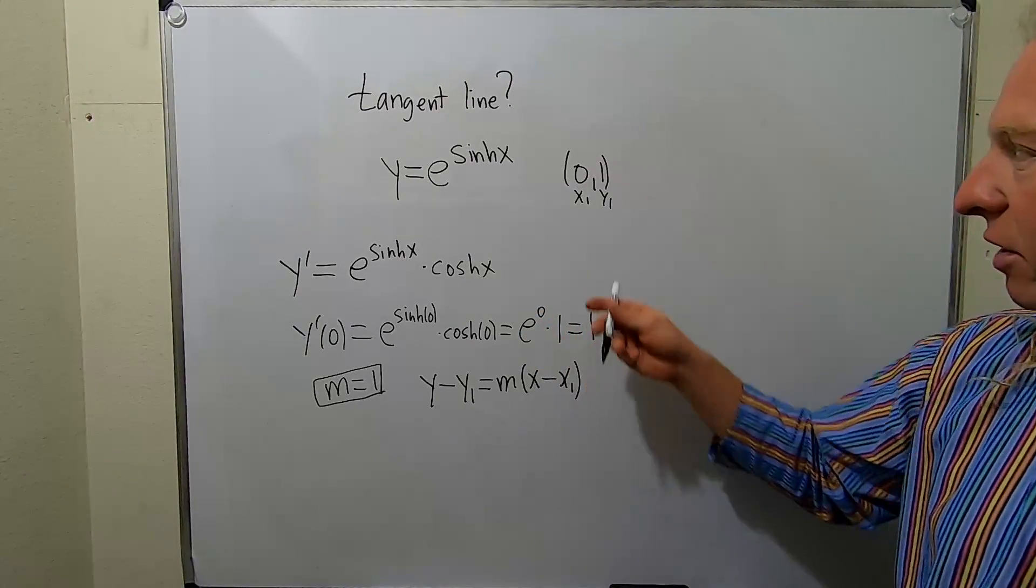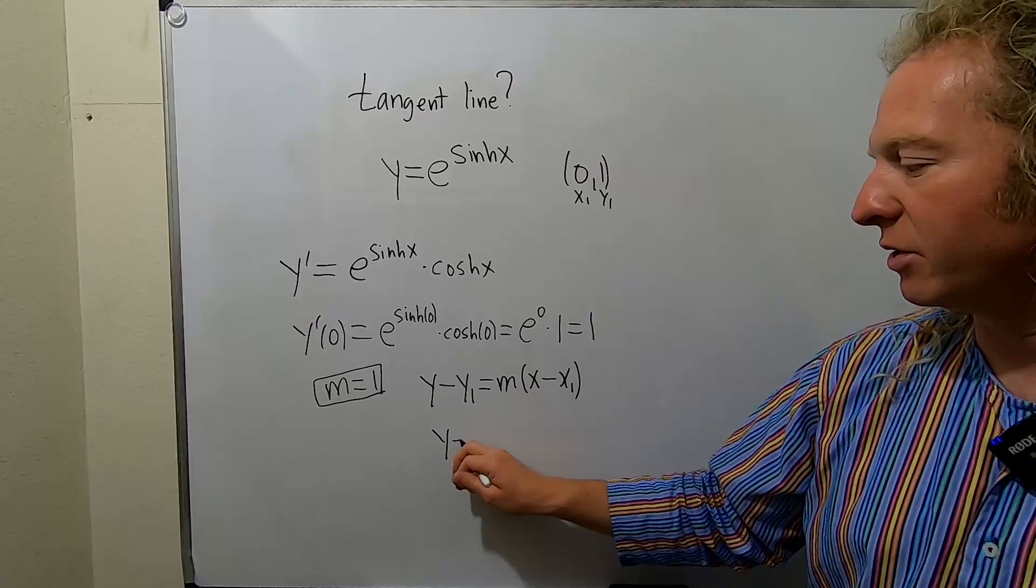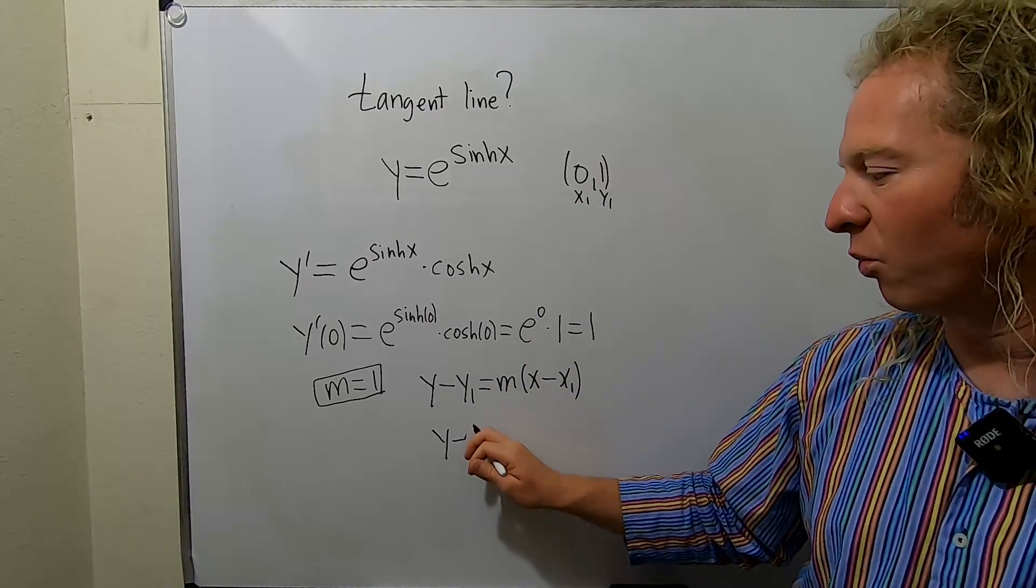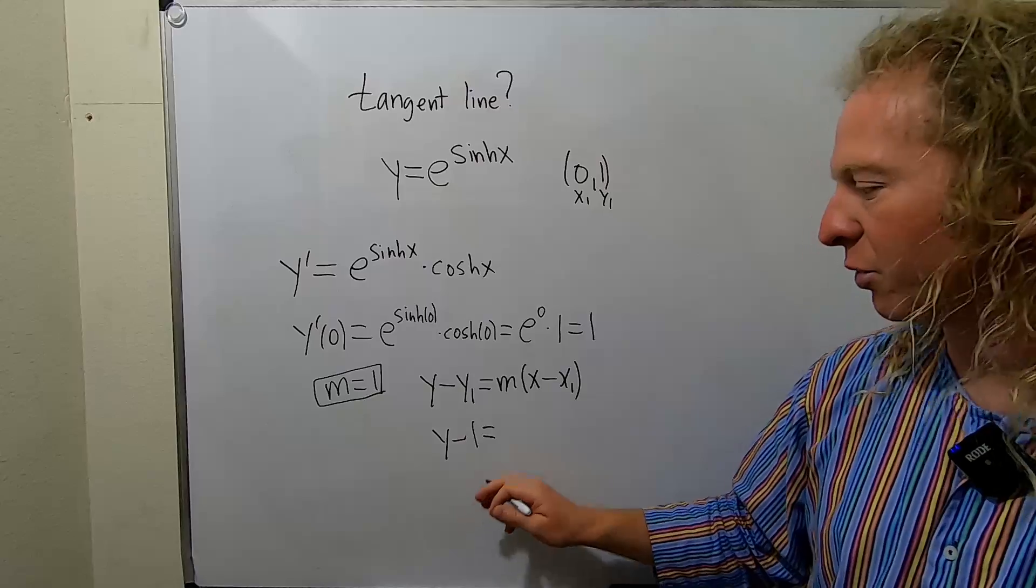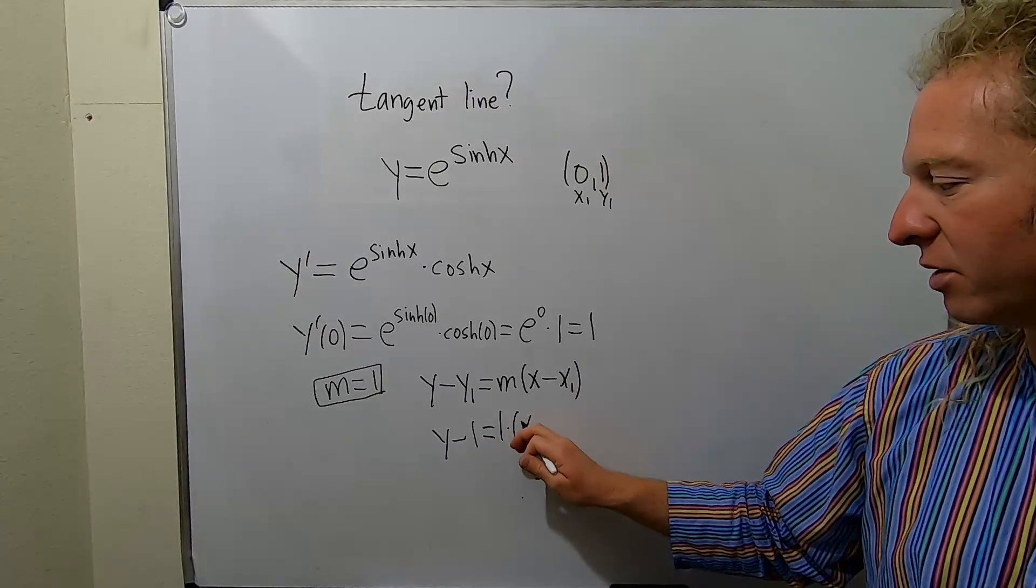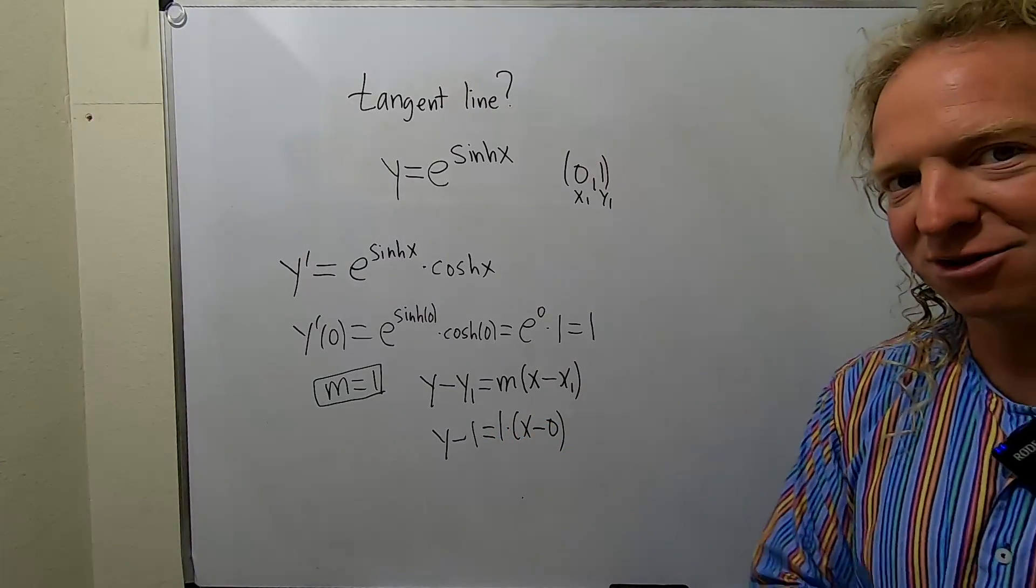Now we carefully plug everything in. We have y minus... So y₁ is 1. And that's equal to m. Well, m was 1. So 1 times (x - 0).